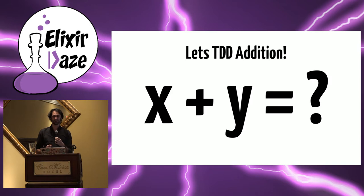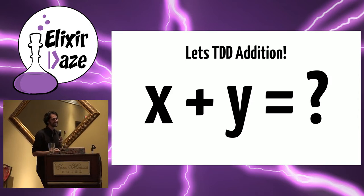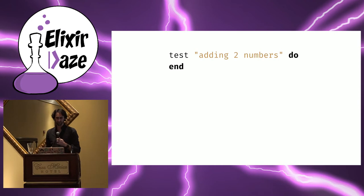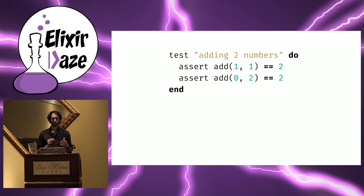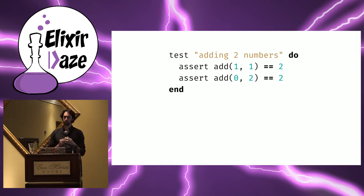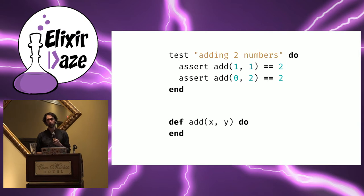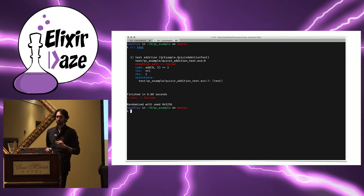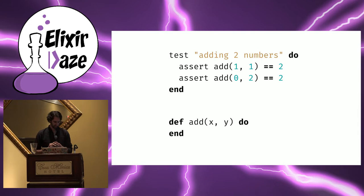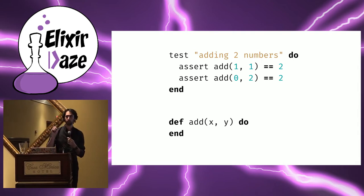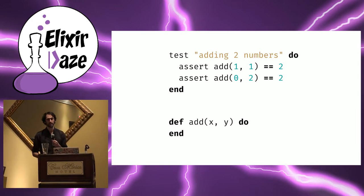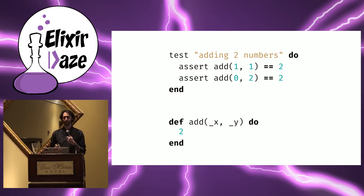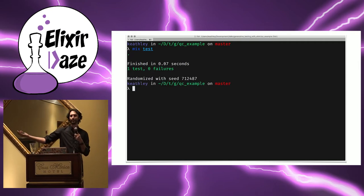Let's TDD addition. We start with a test — we'll test that we can add two numbers together. We'll assert that adding 1 and 1 is 2, and adding 0 and 2 is 2. We stub out the function call, run it, and get a failing test. So how are we going to solve this? We should write as little code as possible to make the test pass. So let's just return 2 — we don't even need these pesky arguments. We'll mark those as unused, and look, we have a green dot. We all love green dots. We deploy this addition-as-a-service and everything's great.